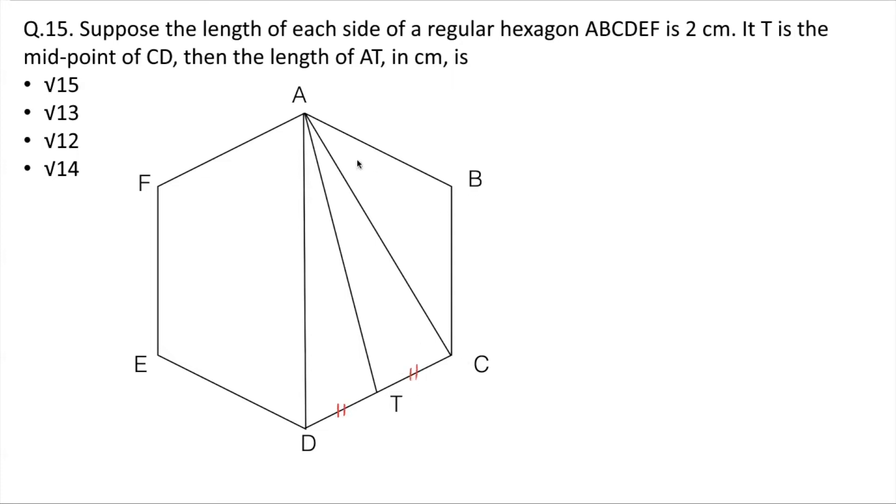So the whole idea is we are going to find the length of AD, AC, and TD also, which is very easily one unit. Same as TC, which is one unit. And then we are going to apply the Apollonius principle to get the answer.